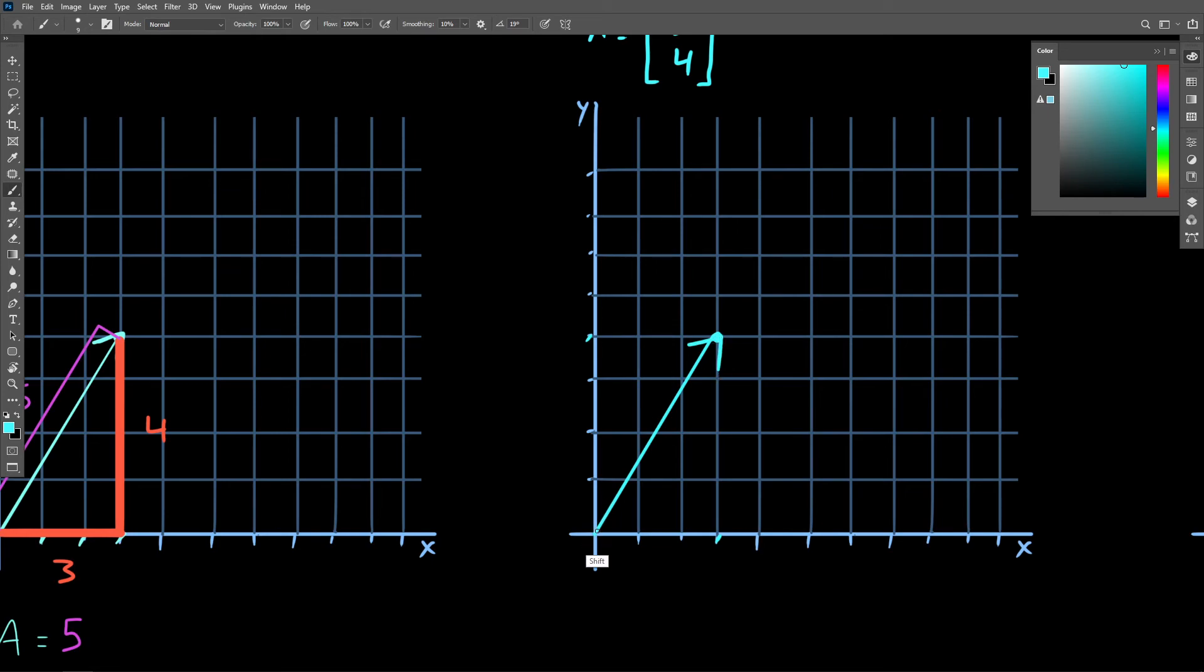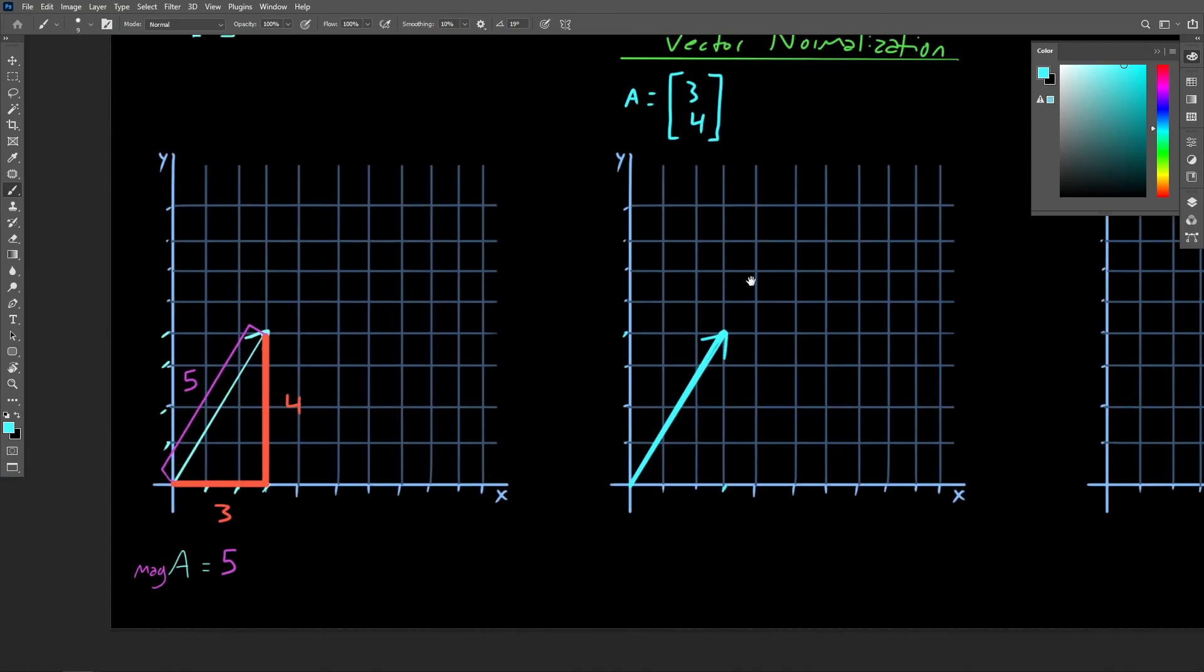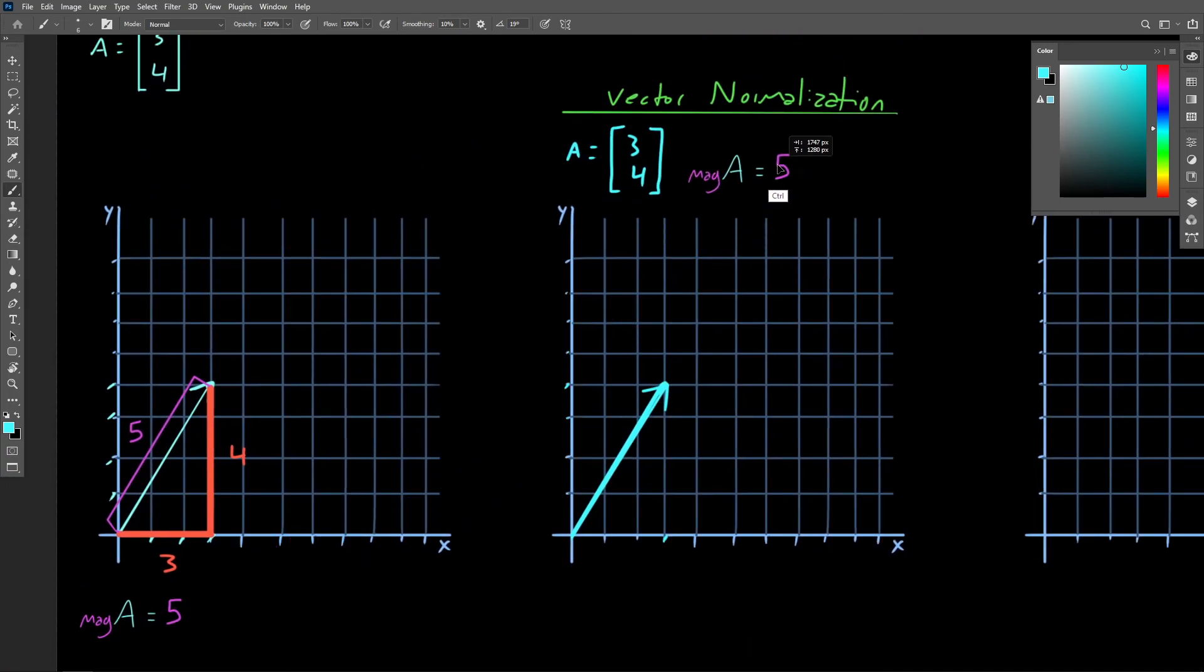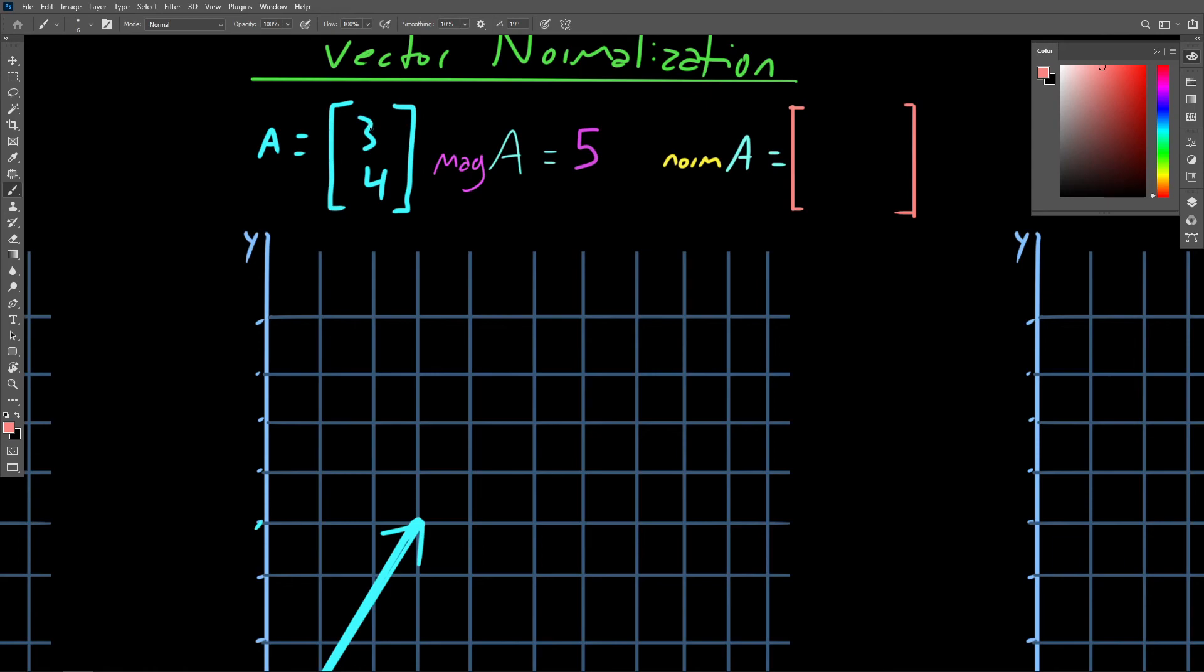To calculate a unit vector, we simply divide each component by the vector's magnitude. So we already have the magnitude of the vector 3, 4. We know that's 5. So we can go ahead and normalize this vector by first dividing the x component by 5, and then the y component. Solving this gives us a value of 0.6 for the x component, and 0.8 for the y.